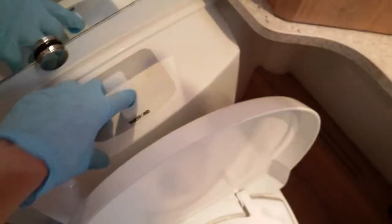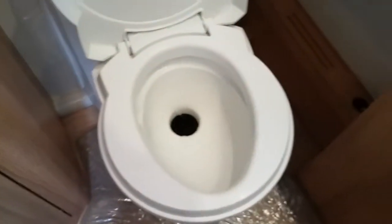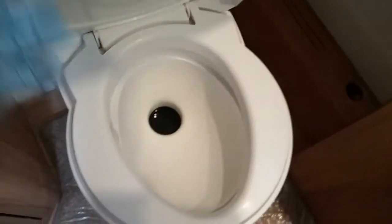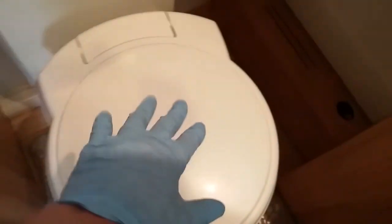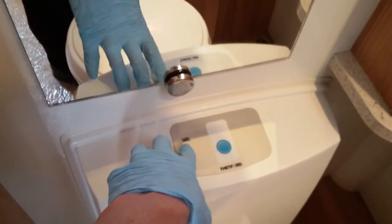Thetford toilet just here. The bowl does swivel to open to the cassette. Just slide the grey lever across just here, and then push the blue button to flush, and then close again. If this has been left open and you try to remove the cassette from the outside it will not come out, so if you do feel resistance just make sure that nobody has left it open. And then level indicator for the cassette just here, so it will illuminate.